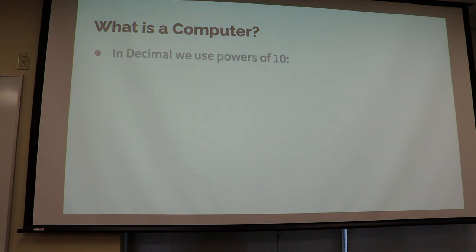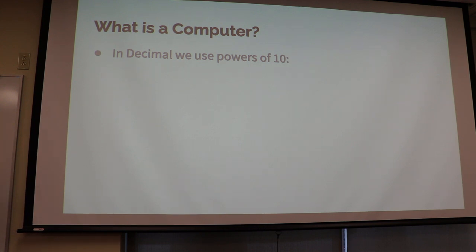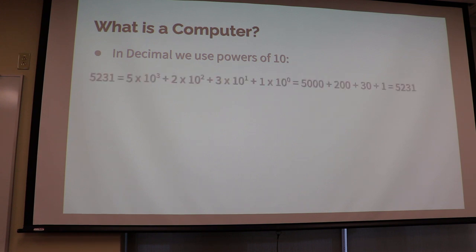So, because computers only know zero and one, they have to count things in what's called a binary system. Because you and me are humans, we use a decimal system because we have these — we have ten fingers. That's why we've settled on powers of ten for our math and our system of counting. So when we count, we go one, two, three, four, five, six, seven, eight, nine.